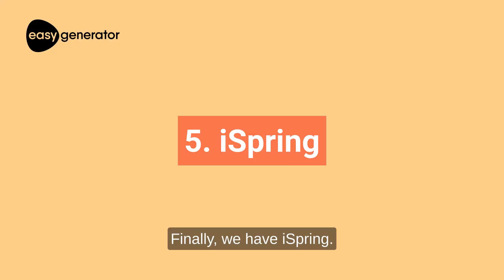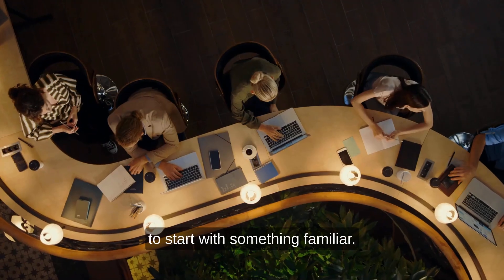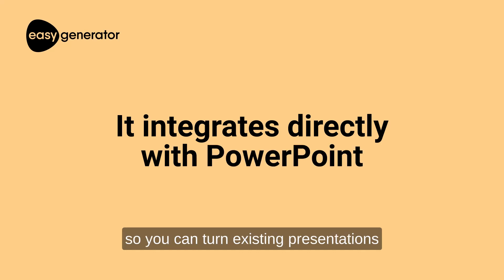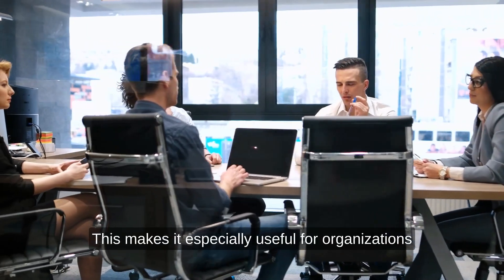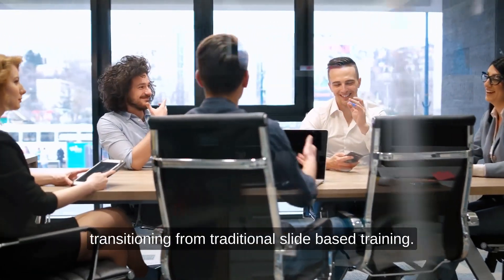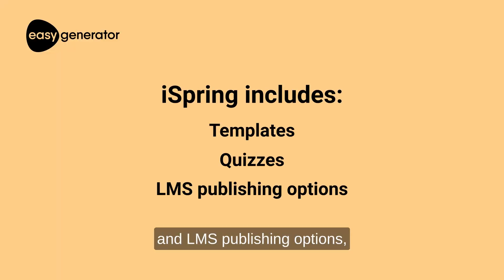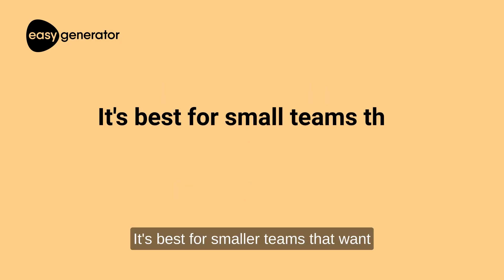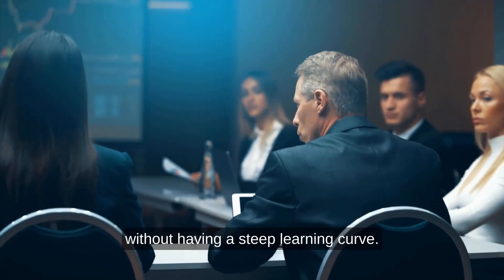Finally, we have iSpring. iSpring is a great entry point for teams who want to start with something familiar. It integrates directly with PowerPoint, so you can turn existing presentations into interactive e-learning in minutes. This makes it especially useful for organizations transitioning from traditional slide-based training. iSpring includes templates, quizzes, and LMS publishing options, but it's more limited in collaboration and AI support. It's best for smaller teams that want to create straightforward courses quickly without a steep learning curve.